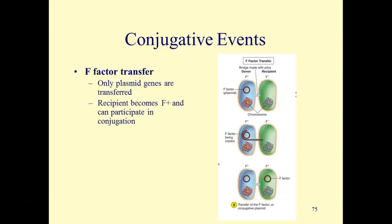In F-factor transfer, only plasmid genes are transferred. The recipient becomes F-plus and can participate in subsequent conjugations. A bridge is made with the pilus, and the DNA is transferred single-strandedly from the F-plasmid into the recipient cell. Now this recipient cell has an exact copy of the F-factor and is F-plus, able to conjugate with other F-minus cells.